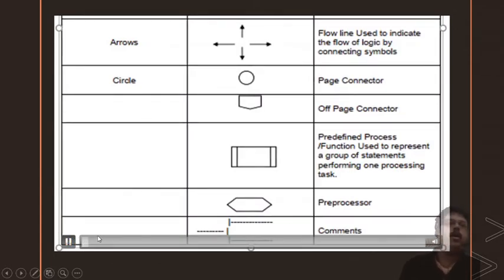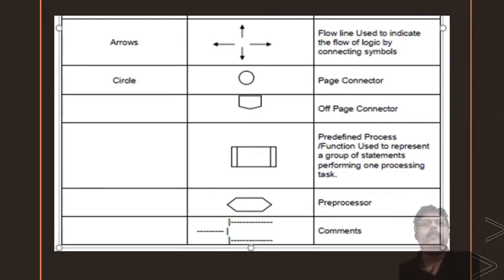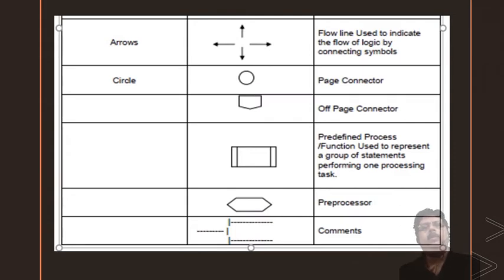In this video, you can see arrows, which show the direction in which the data is flowing or the program is executed. A circle is used to connect your flowchart within a page. That means if your flowchart reaches the bottom of the page and still continues, you can link or continue it on the same page using this symbol. You can use labels like A or B inside the circle to represent from where it continues.